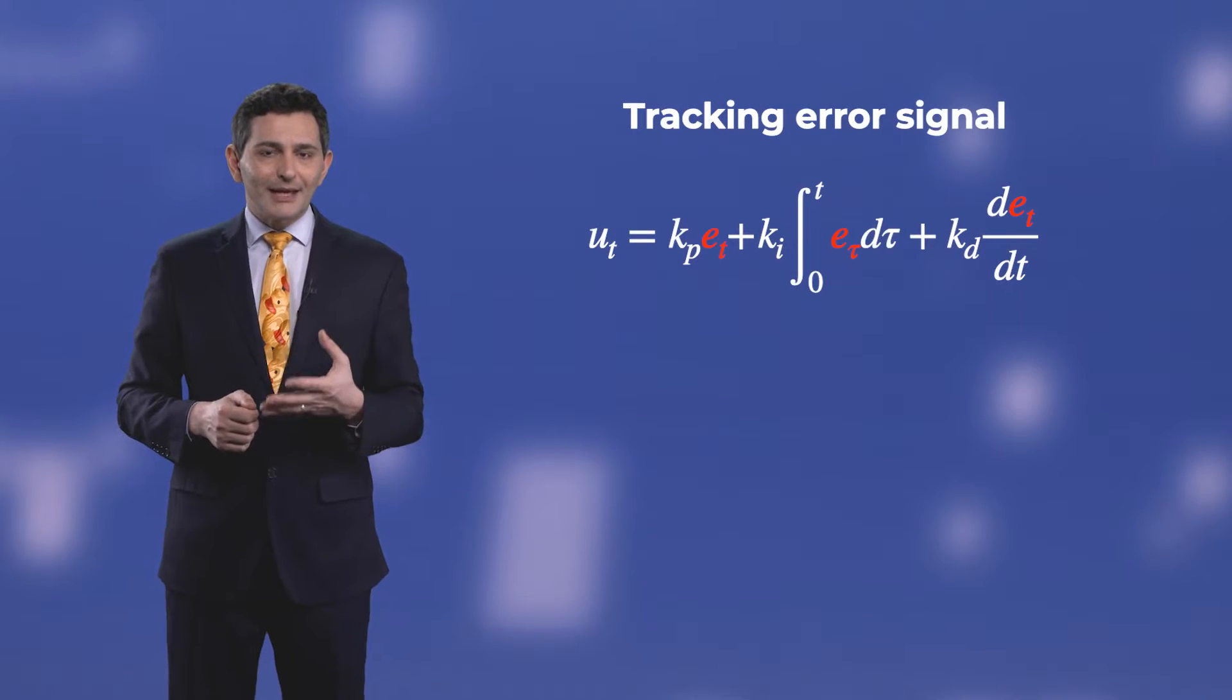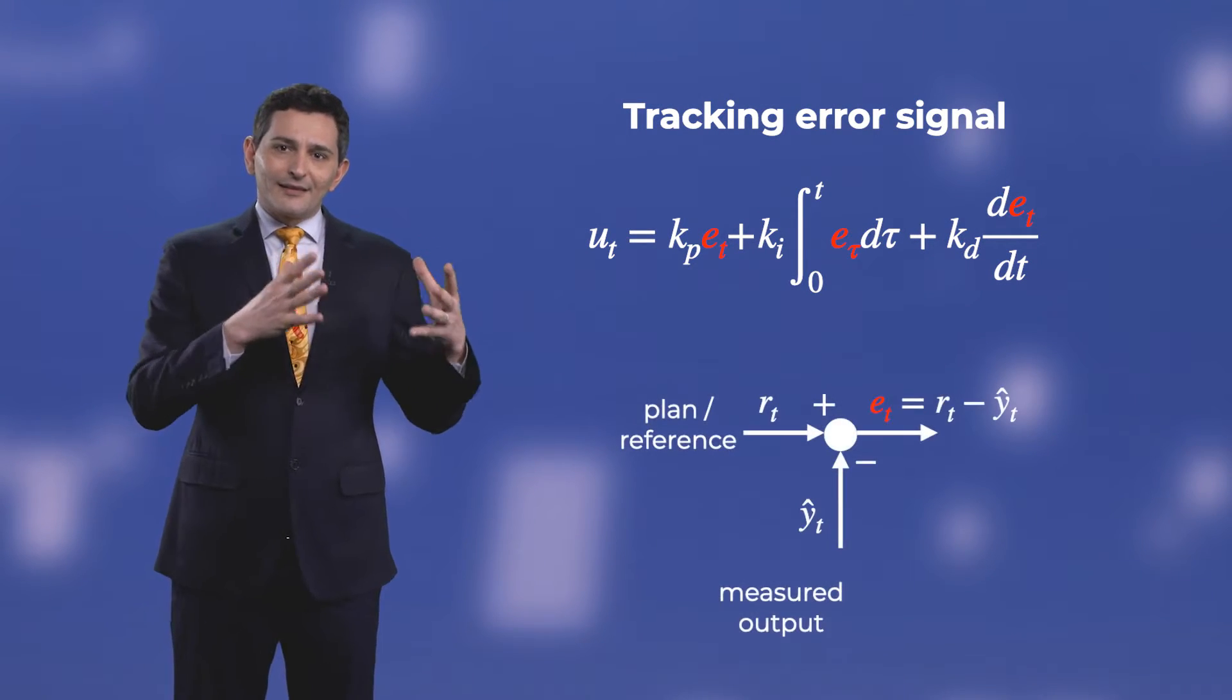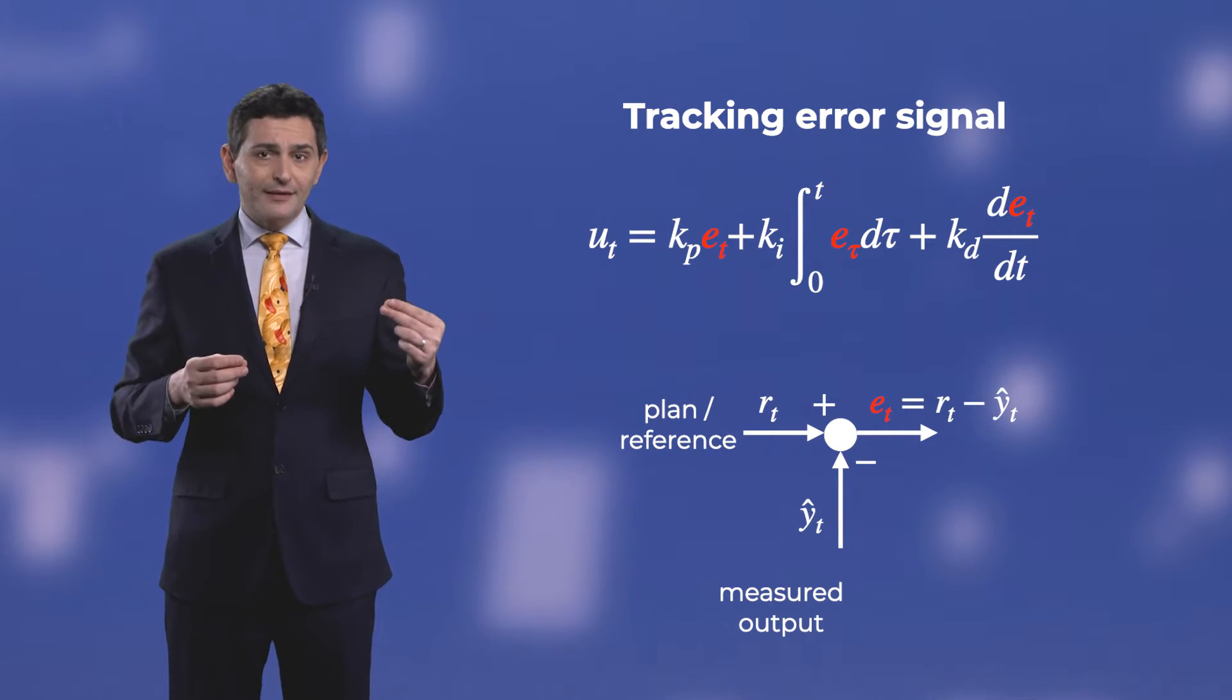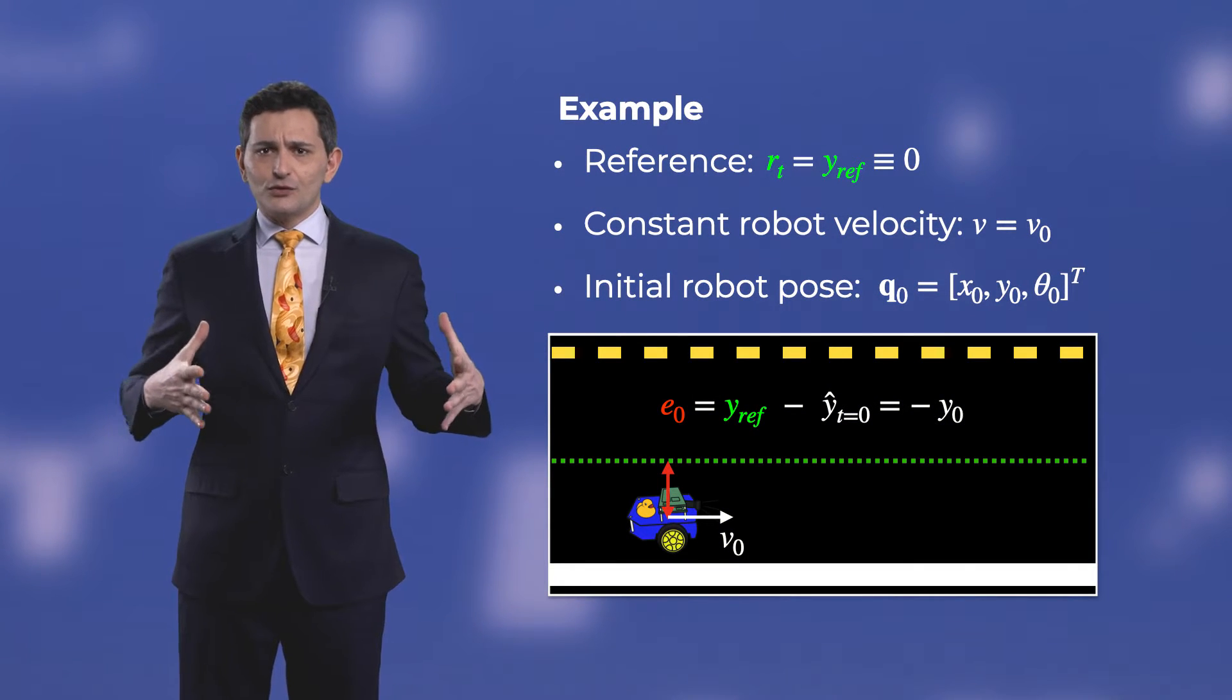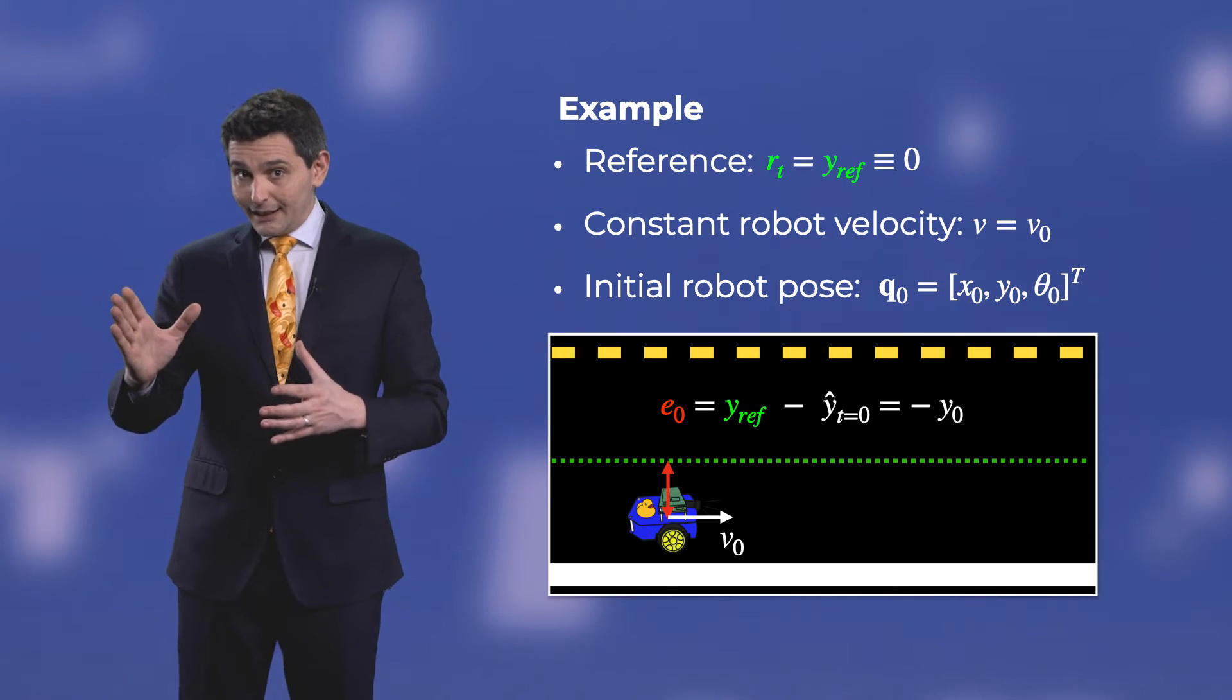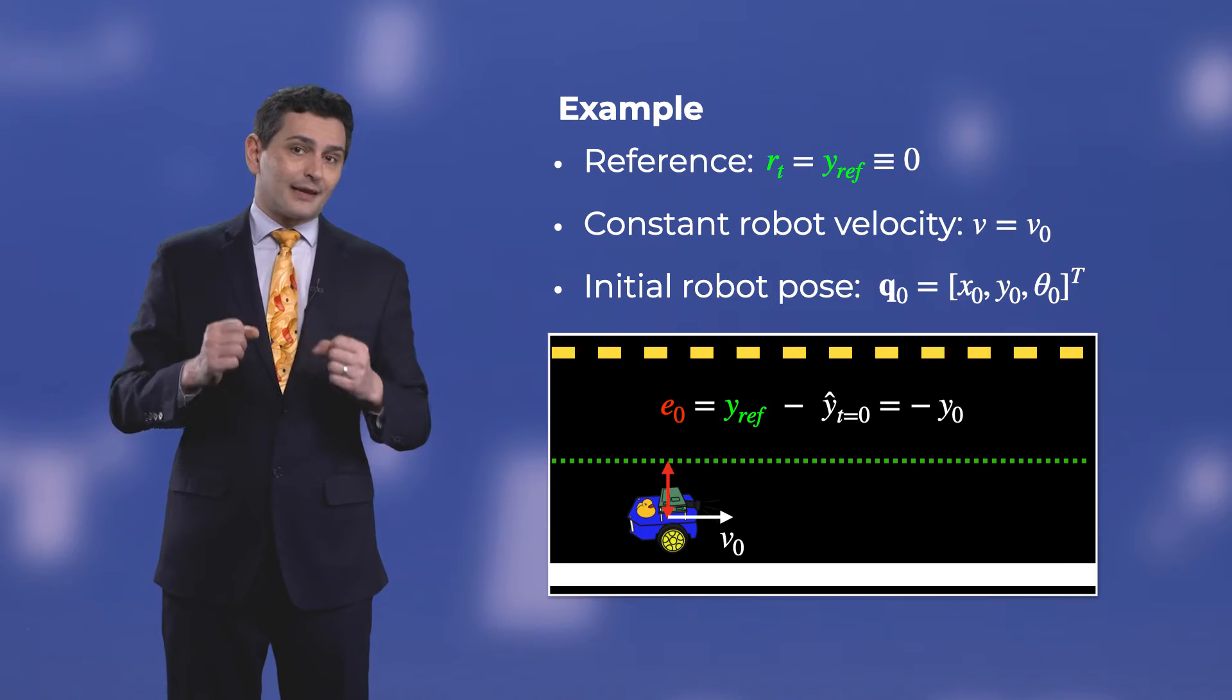The three components of PID control are functions of the tracking error signal. This error signal is obtained by subtracting the measured output of the system from a reference signal. An example reference signal for a robot that has to drive straight down the road might be zero heading and a constant lateral position to keep it always at the center of the lane.